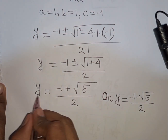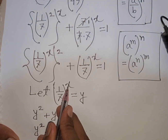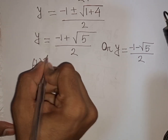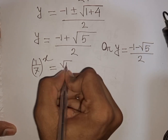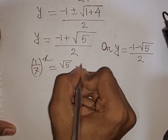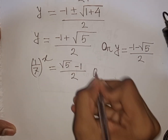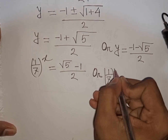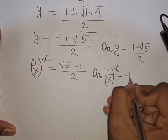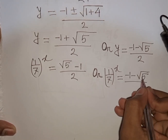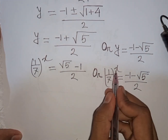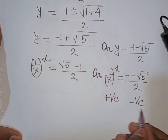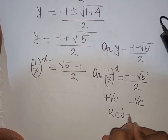Remember that y equals (1 over 7) to the power x. So (1 over 7)^x equals (negative 1 plus square root of 5) over 2, or (1 over 7)^x equals (negative 1 minus square root of 5) over 2. The second case is negative, but (1 over 7)^x is always positive, so that case is rejected.